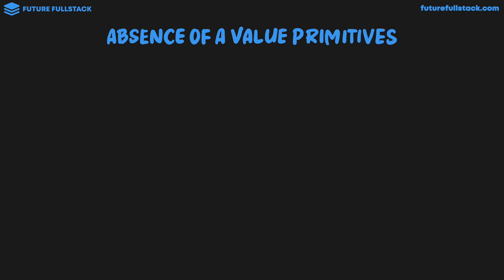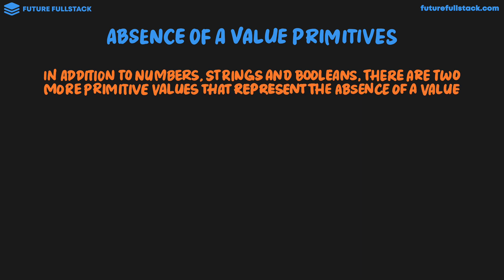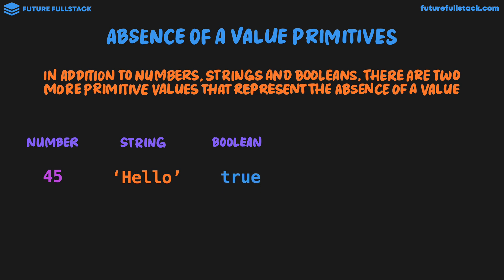We're going to be looking at the absence of a value primitives. In addition to numbers, strings, and booleans, there are two more primitive values that represent the absence of a value. We already know the three most common primitive values: number, like 45; string, which are characters of text enclosed by single or double quotation marks; and a boolean, which is a logical primitive and is either true or false. Number, string, and boolean are primitive values that are actual values.